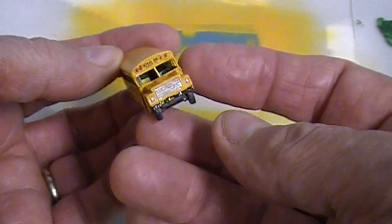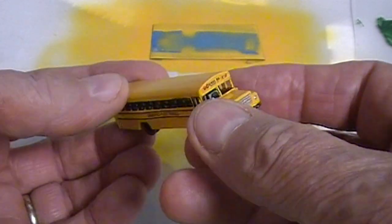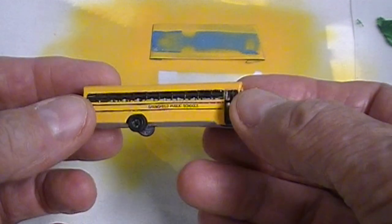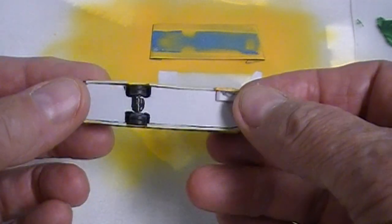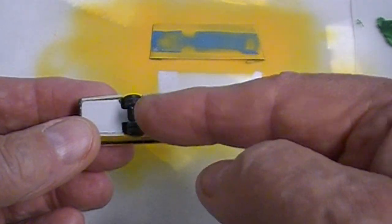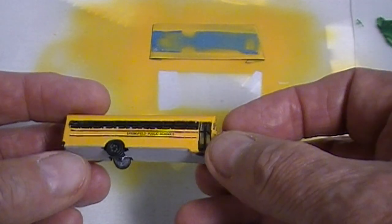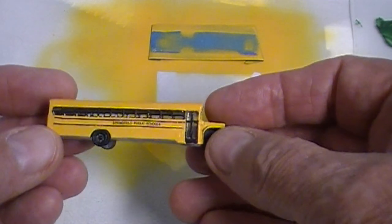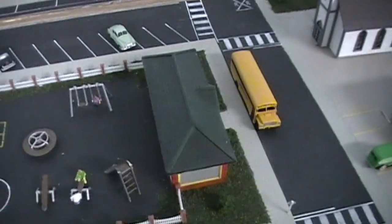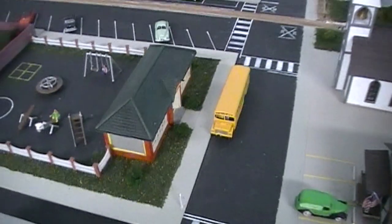Anyway it came out real nice. The only complaint I have is that the rear axle is slightly cocked a couple degrees off to one side. But that doesn't matter. It came out real nice. And here we have it in front of the schoolhouse.